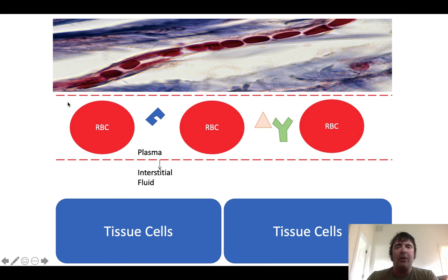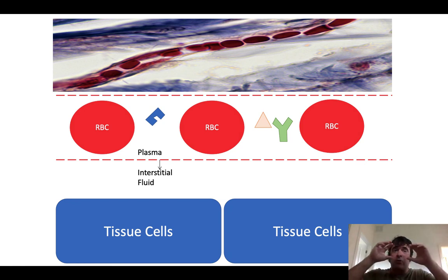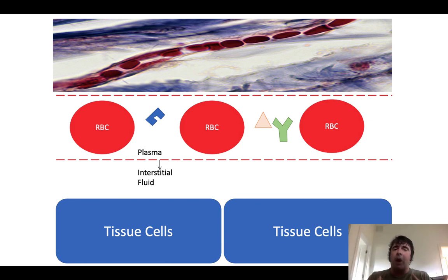Cardiovascular 101: the heart pumps blood into arteries, which carry blood away from the heart. Arteries branch into arterioles — macroscopic arteries you can see with the unaided eye branch into microscopic arterioles, which are part of the micro circulation. Arterioles then feed into capillaries.